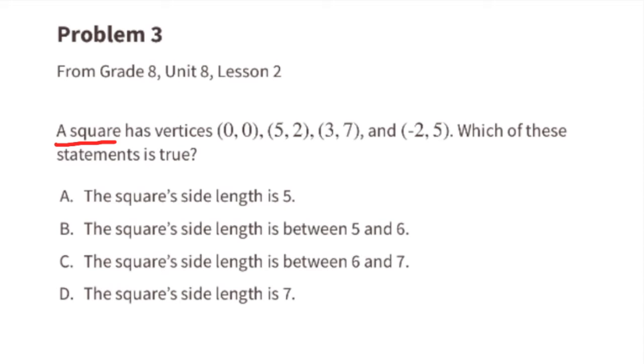Problem number 3, from 8th grade Unit 8 Lesson 2: A square has vertices (0, 0), (5, 2), (3, 7), and (-2, 5). Which of these statements is true? This is what the graph of the square looks like.